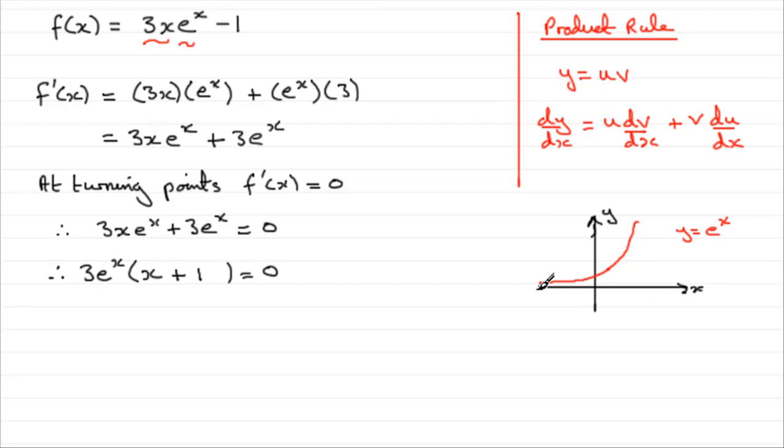The x-axis is often called an asymptote. The curve just approaches it, never crosses it, never equals 0. So e to the x can't equal 0, so it must be the x plus 1 that equals 0.